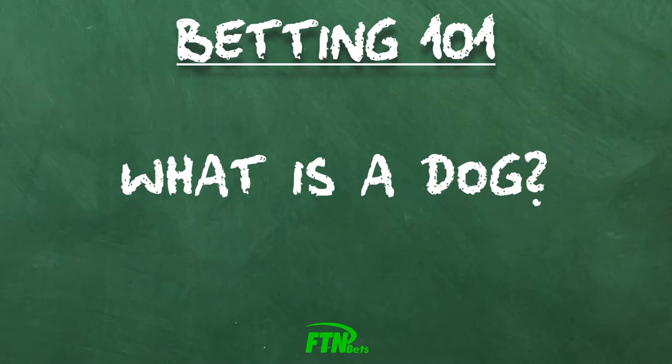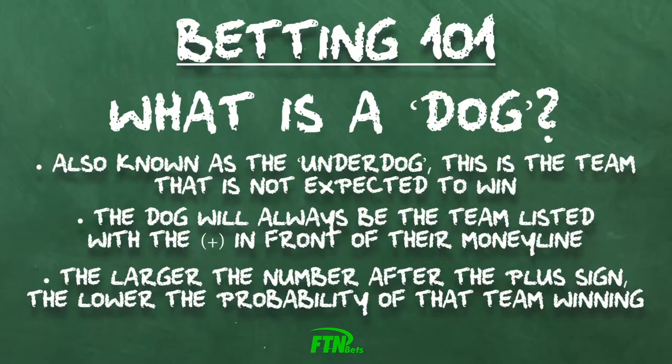Also known as an underdog, the dog refers to a team that's not expected to win. In a typical two-way American style line, the dog will always be the team listed with the plus in front of their money line. The larger the number after the plus sign, the lower the probability of that team winning.